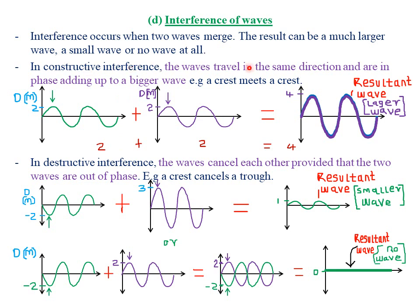For constructive interference, the waves usually travel in the same direction and are in phase, adding up to a bigger wave. In case you have difficulty understanding what we mean by waves being in phase, you can review our lessons on Waves 1. In constructive interference, a crest meets a crest, or a trough combines with another trough.